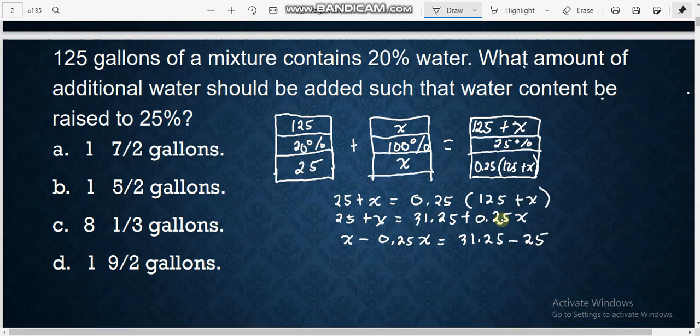1 minus 0.25 is 0.75x, and we have 31.25 minus 25, that is 6.25. Divide both sides by 0.75.